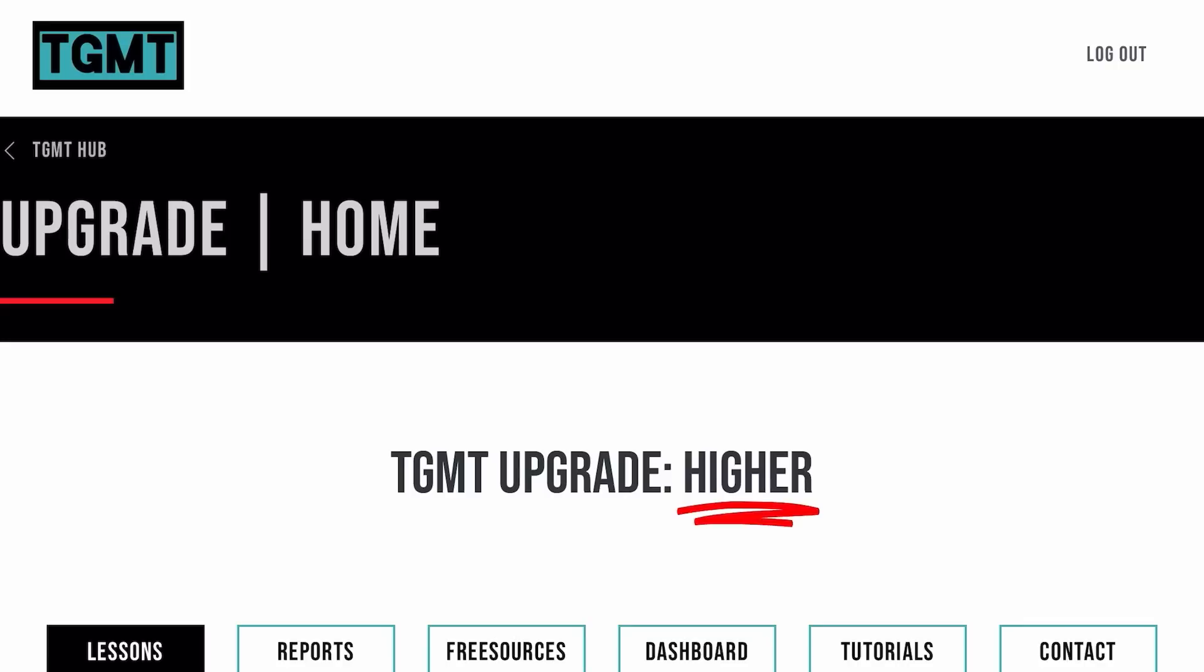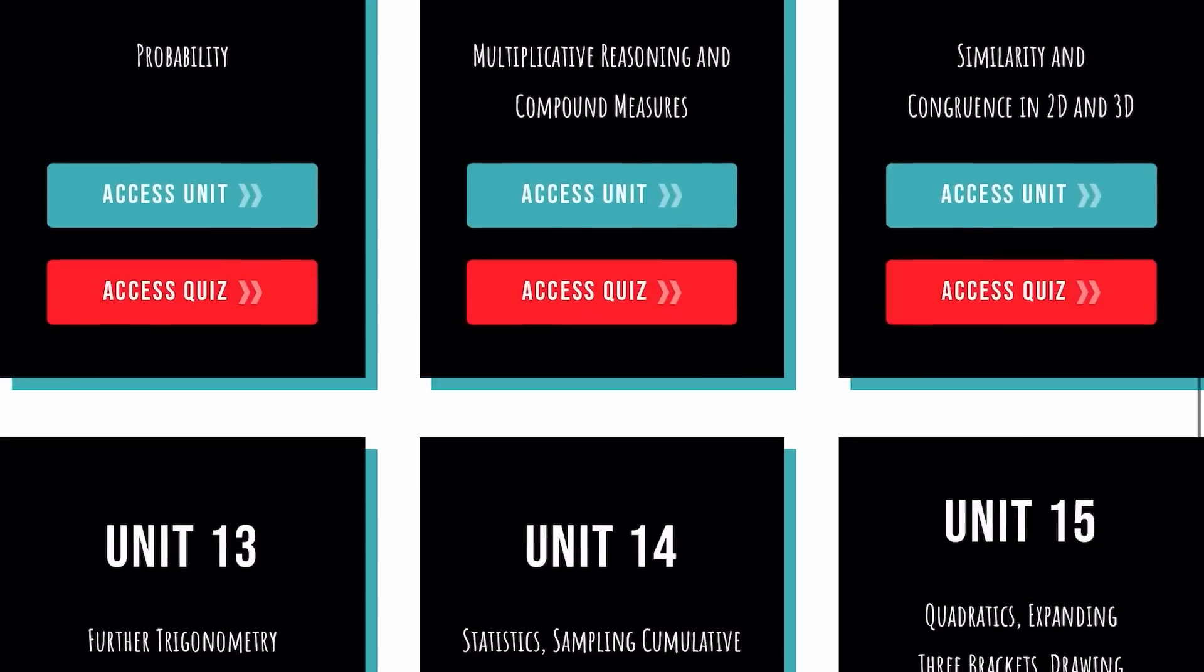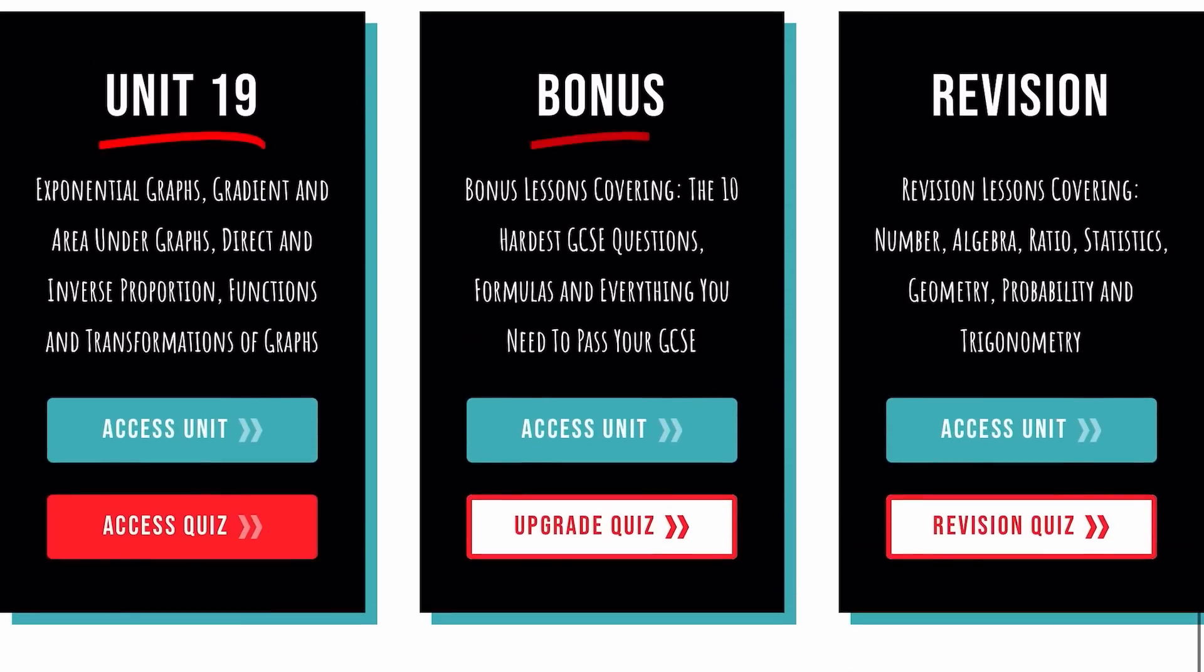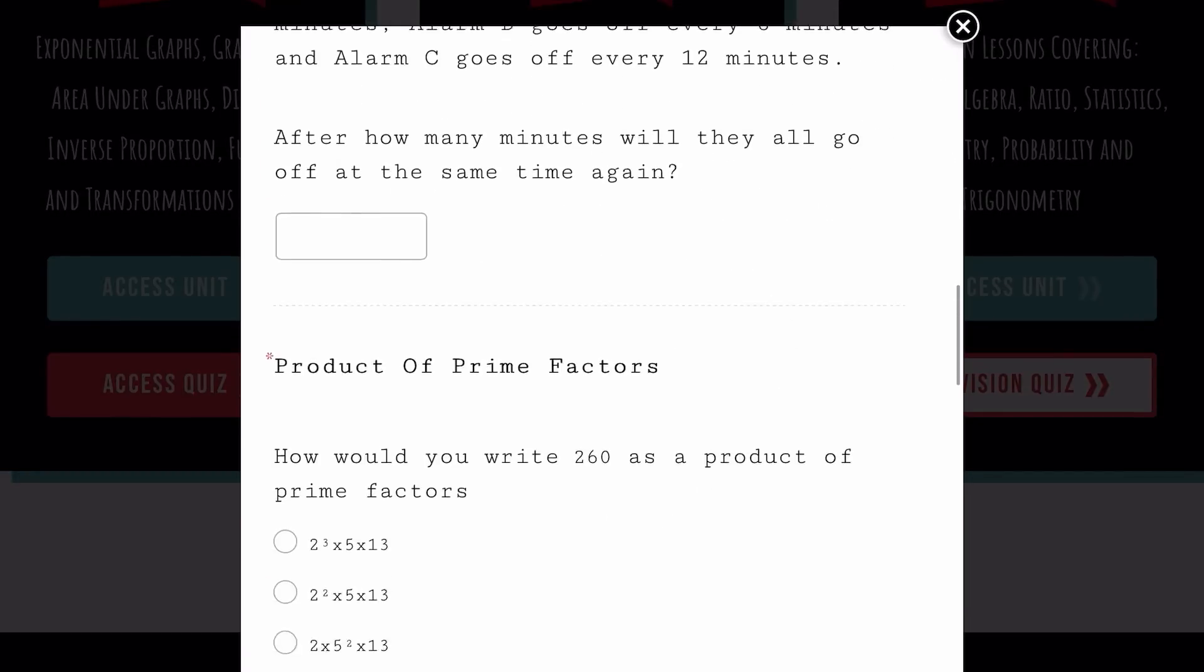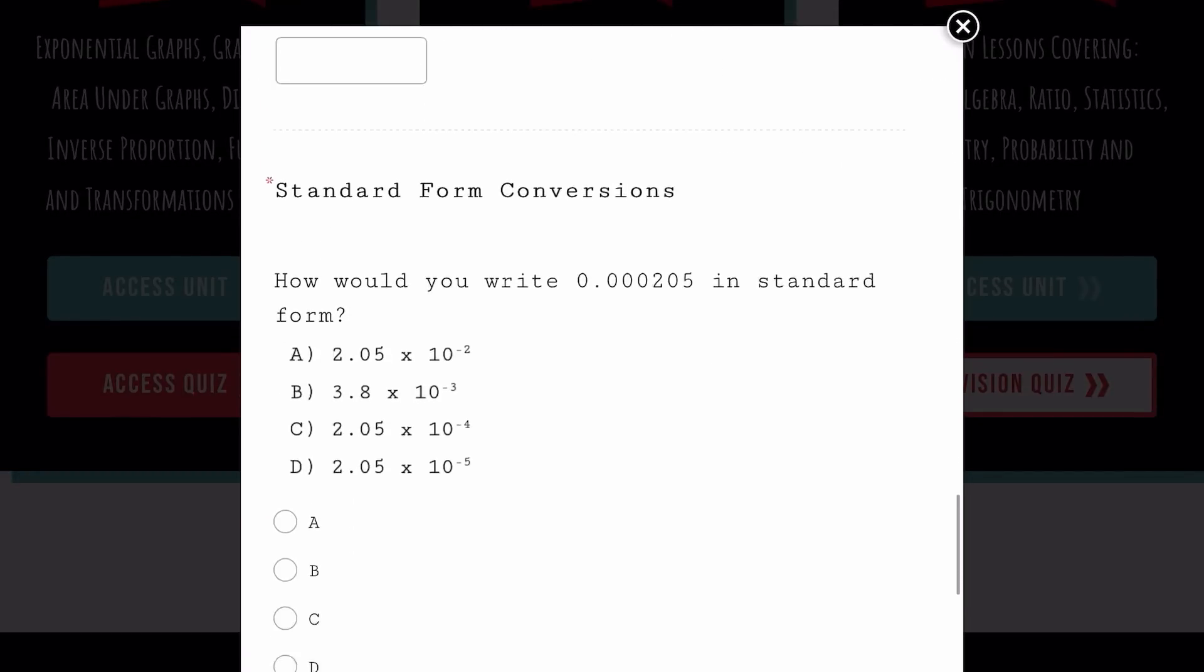Step 3. Head back to the Hub and go to the bottom. You can now go onto the upgrade quiz. On here you're going to be able to answer questions, different to the first, on every single topic within the GCSE.